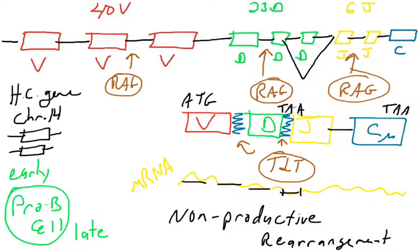When VDJ recombination is occurring, not all of them produce a functional open reading frame that will make a complete heavy chain protein. In fact, about two-thirds of the time, this process fails. It's a pretty high failure rate. But the nice thing is that the cell can recover, because it can basically say, well, I joined these together in this way, and that didn't give me a heavy chain protein, a complete heavy chain protein.